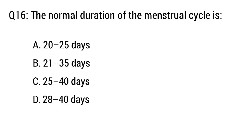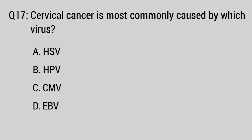Question number 16. The normal duration of the menstrual cycle is — the right option is option B: 21 to 35 days.